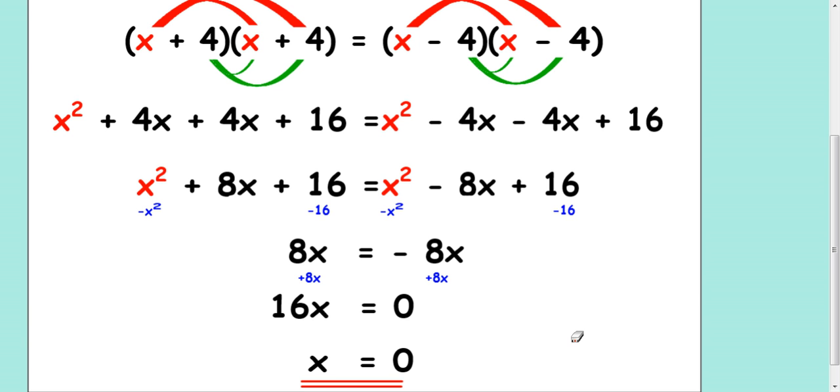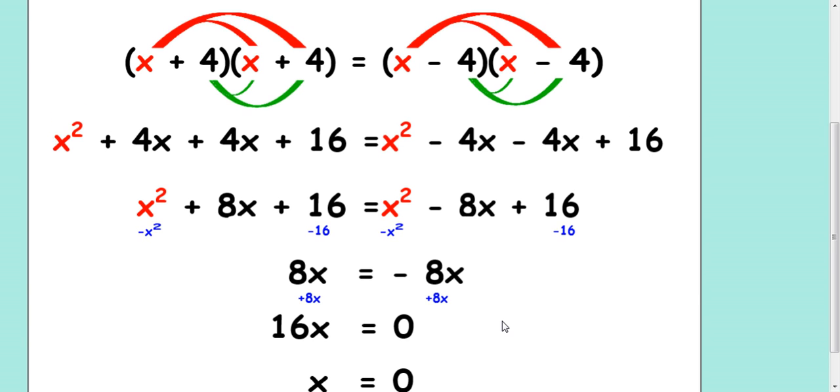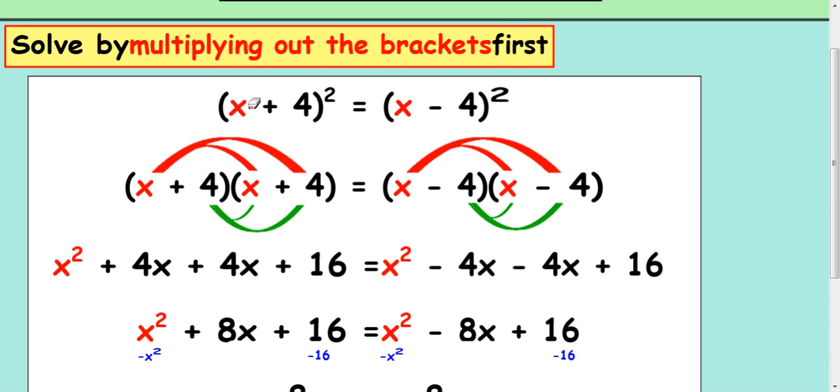It is possible to get a solution of x equals 0. And if you're not sure, you can test it out. 0 plus 4 is 4. You square it, you get 16. It works. 0 take away 4 is negative 4. You square it, you get 16. It works.